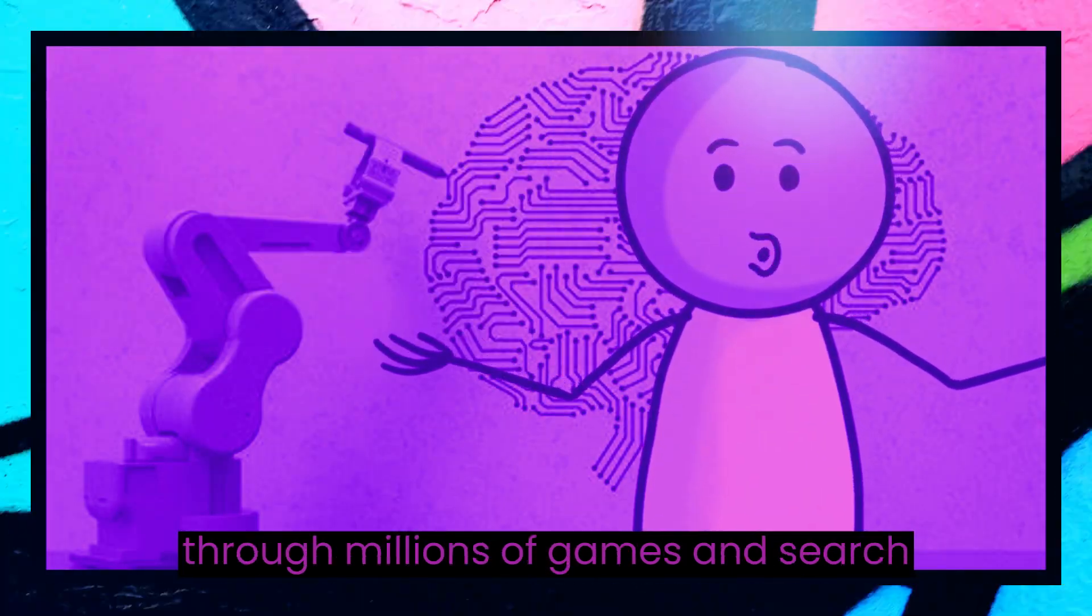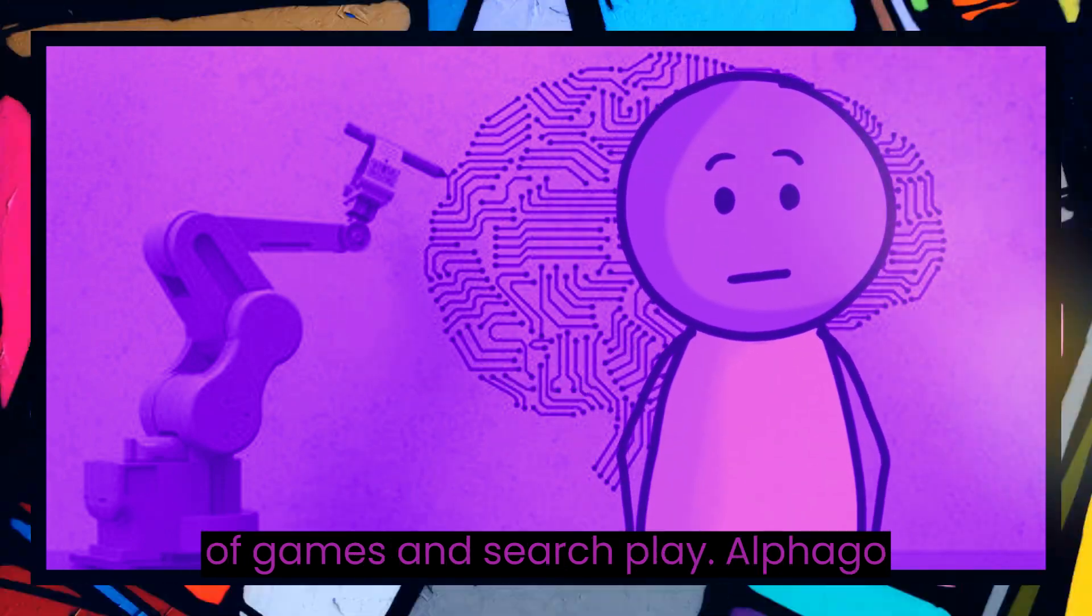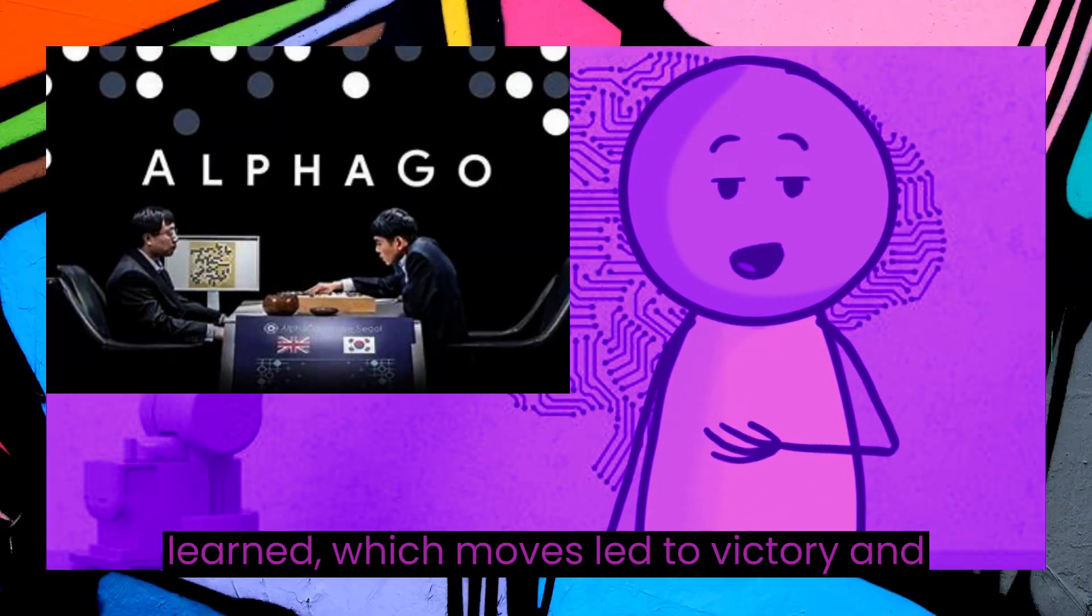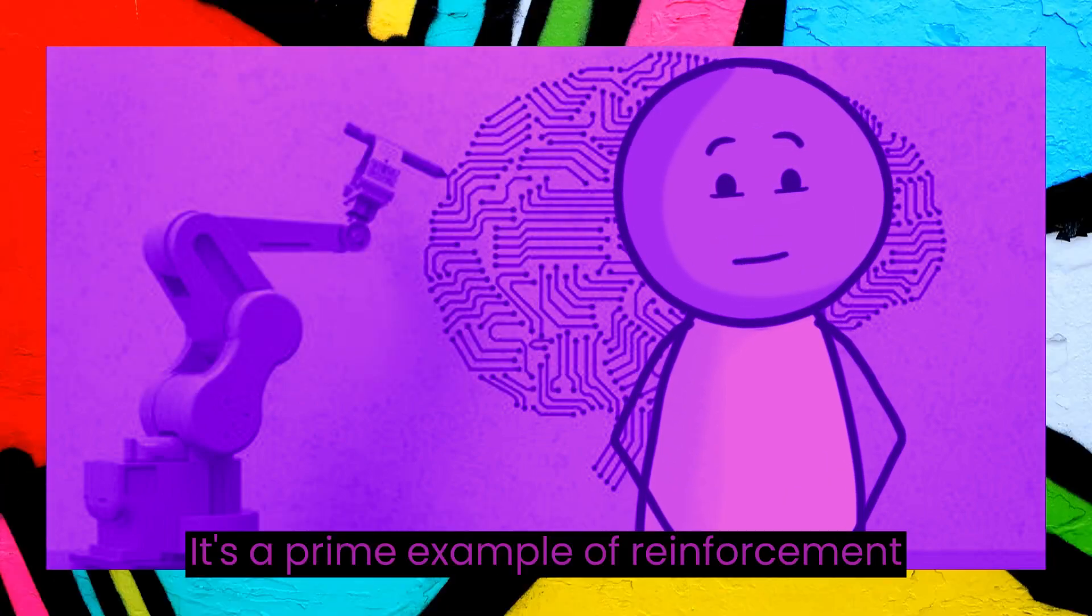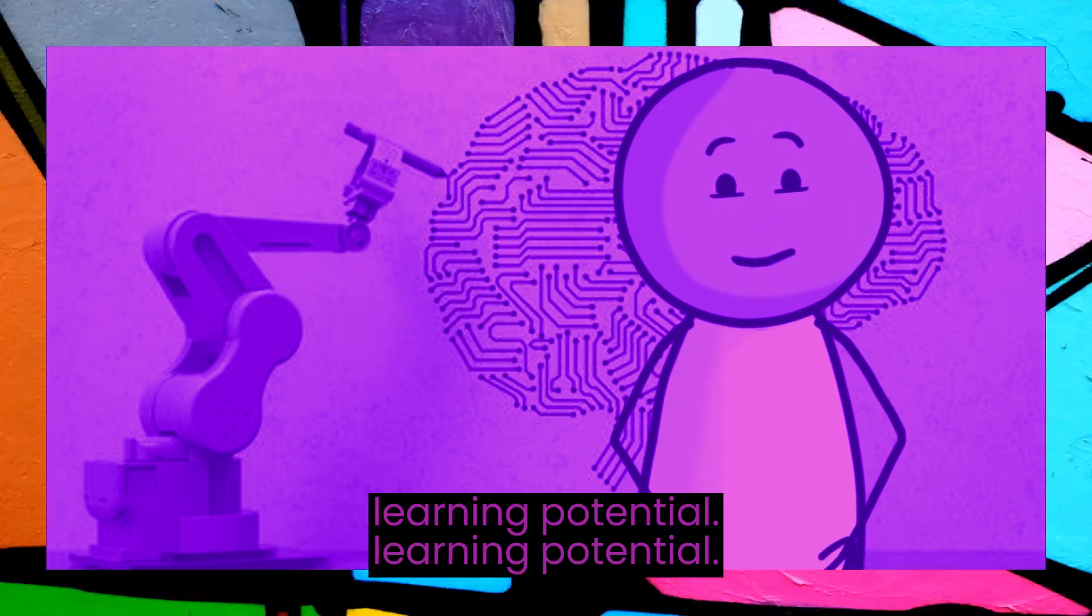It mastered the game through millions of games and self-play. AlphaGo learned which moves led to victory and continually improved its strategy. It's a prime example of reinforcement learning's potential.